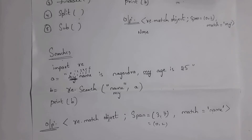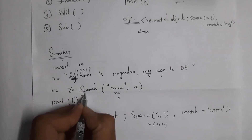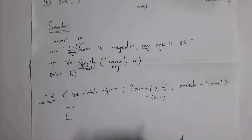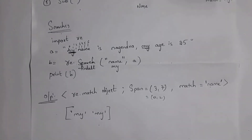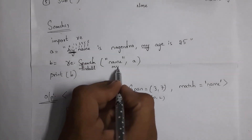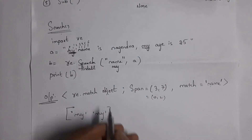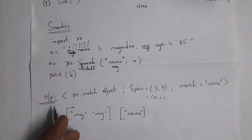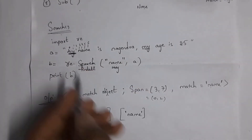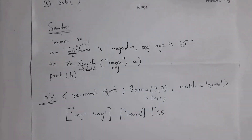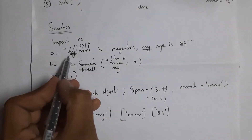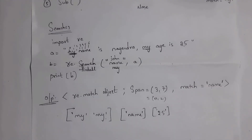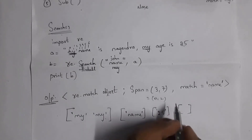To overcome this problem we use find all. Using findall, I write re.findall('my', a). The findall function represents output in the form of a list. Since 'my' is available twice, you will get output ['my', 'my']. For example, searching 'name' returns ['name'], searching '25' returns ['25'] — note that 25 is treated as a string, so it appears in single quotations. If I search 'john', which is not in the string, it returns an empty list.